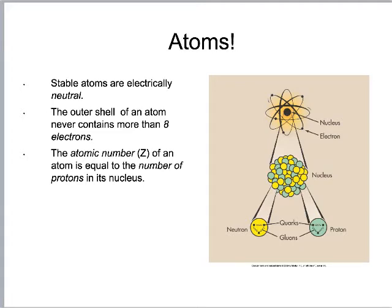The atomic number, or Z number, equals the number of protons in the nucleus and determines what element the atom represents — one proton is hydrogen, two is helium. Key points going forward: stable atoms are neutral, electron clouds are significant, and protons play a major role in attenuating the x-ray beam. The number of protons largely determines how likely an x-ray beam will be attenuated.